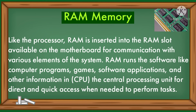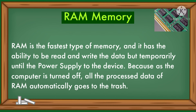RAM runs software like computer programs, games, applications and other information in the CPU for direct and quick access when needed. RAM is the fastest type of memory and has the ability to read and write data, but only temporarily — when the computer is turned off, all processed data in RAM is automatically lost.